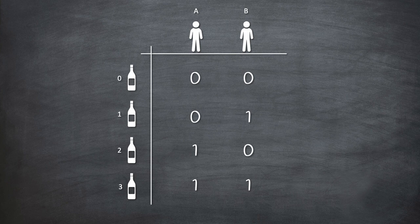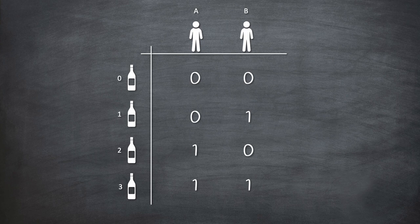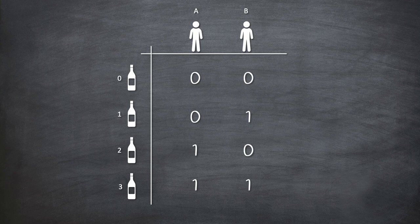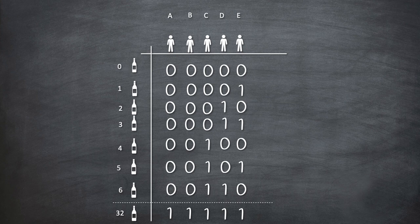So with only 2 prisoners, we can find out the poison bottle among 4 bottles. Let's see how many bottles we can find if we have 5 prisoners instead of 2. We will be able to find poison bottles among 32 bottles, which is also 2 to the power of 5.